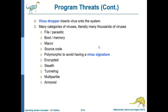Stealth viruses attempt to avoid detection by modifying parts of the system used to detect them. Tunneling viruses install themselves before an antivirus can detect them. Multipartite viruses can infect multiple parts of a system — both boot sectors, memory, and files — making them a dangerous combination of file virus and boot virus.